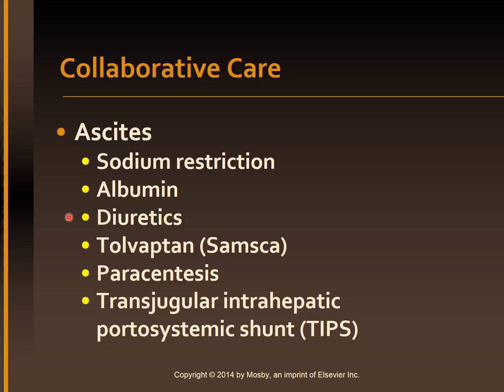Spironolactone is an antagonist of aldosterone and is potassium-sparing. A high-ceiling loop diuretic such as furosemide (Lasix) is frequently used in combination with a potassium-sparing drug. Tolvaptan (SAMSCA), a vasopressin receptor antagonist, is used to correct hyponatremia in patients with cirrhosis. It causes an increase in water excretion, resulting in increased serum sodium concentrations. A paracentesis may be performed to remove ascitic fluid or to test the fluid for infection, and is reserved for patients with impaired respiration or abdominal pain caused by severe ascites. It is only a temporary measure as fluid tends to reaccumulate.